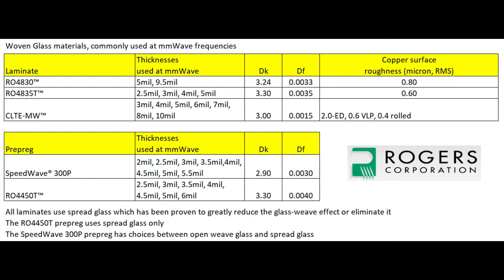The bottom table is prepreg — the SpeedWave 300P — with many thickness choices: 2 mil, 2.5 mil, 3 mil, all the way up to 5.5 mil. DK 2.9, dissipation factor 0.003, which is a worst-case scenario — most choices are around 0.0026 up to 0.003 per the data sheet. With SpeedWave prepreg, there are choices of different glass styles: some open weave and some spread weave. The spread weave glass is what you want at millimeter wave because it acts more like a plane of glass, avoiding those openings that can disturb the wave and cause the glass weave effect.